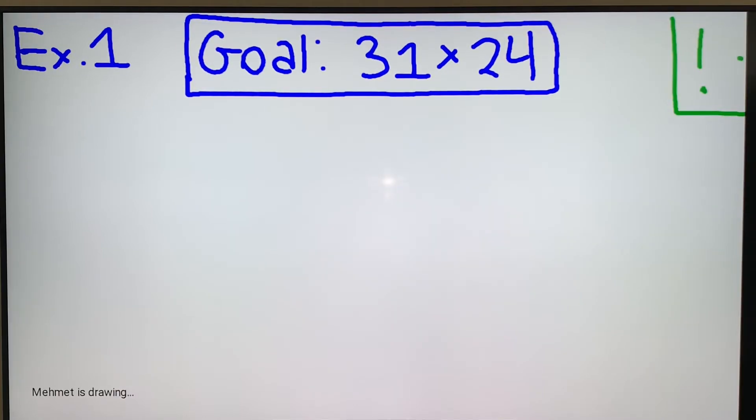Our first example is 31 times 24. If you watch my other video on consecutive numbers, the other trick, you can know that we sometimes factor these numbers out to get a solution. But in this case, 31 is a prime number so we can't do that.